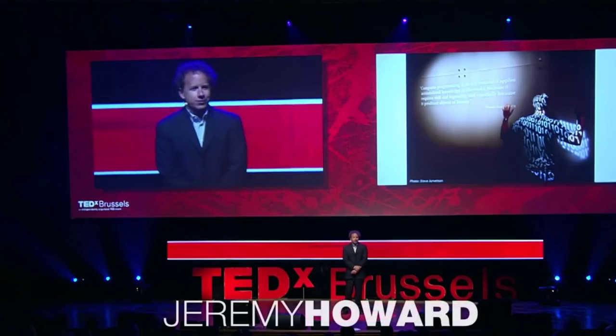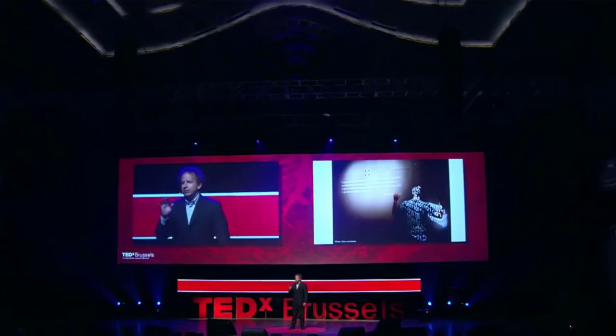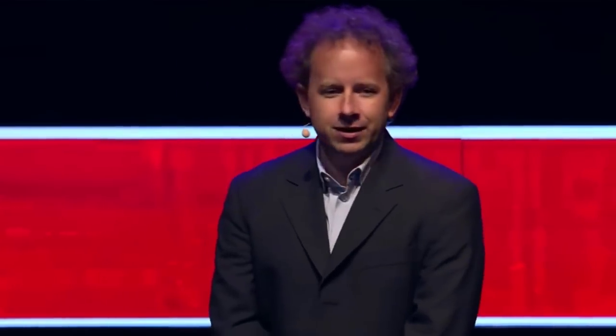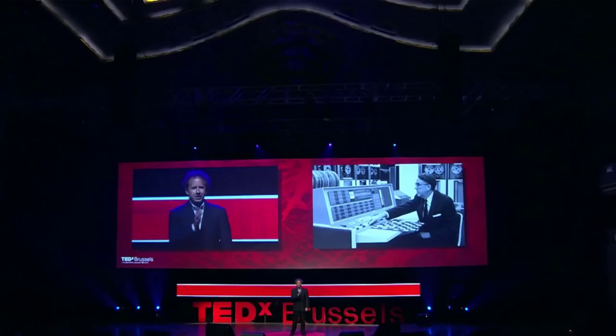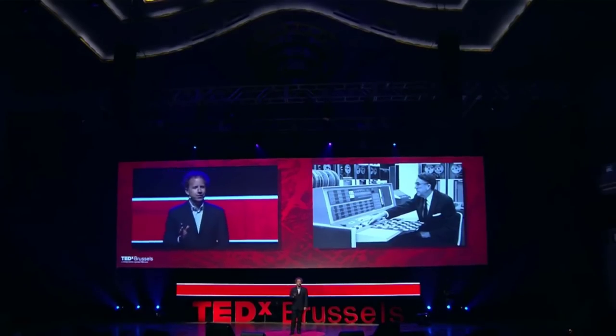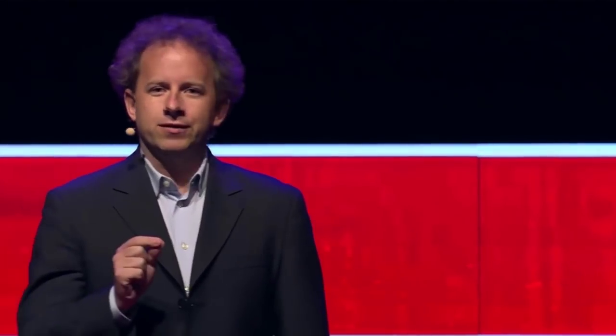Well, it used to be that if you wanted to get a computer to do something new, you would have to program it. Now, programming, for those of you who haven't done it yourself, requires laying out in excruciating detail every single step that you want the computer to achieve, to do in order to achieve your goal. Now, if you want to do something you don't know how to do yourself, then this is going to be a great challenge. So this was the challenge faced by this man, Arthur Samuel. In 1956, he wanted to get this computer to be able to beat him at checkers. How can you write a program, lay out in excruciating detail, how to be better than you at checkers? So he came up with an idea. He had the computer play against itself thousands of times and learn how to play checkers. And indeed it worked.